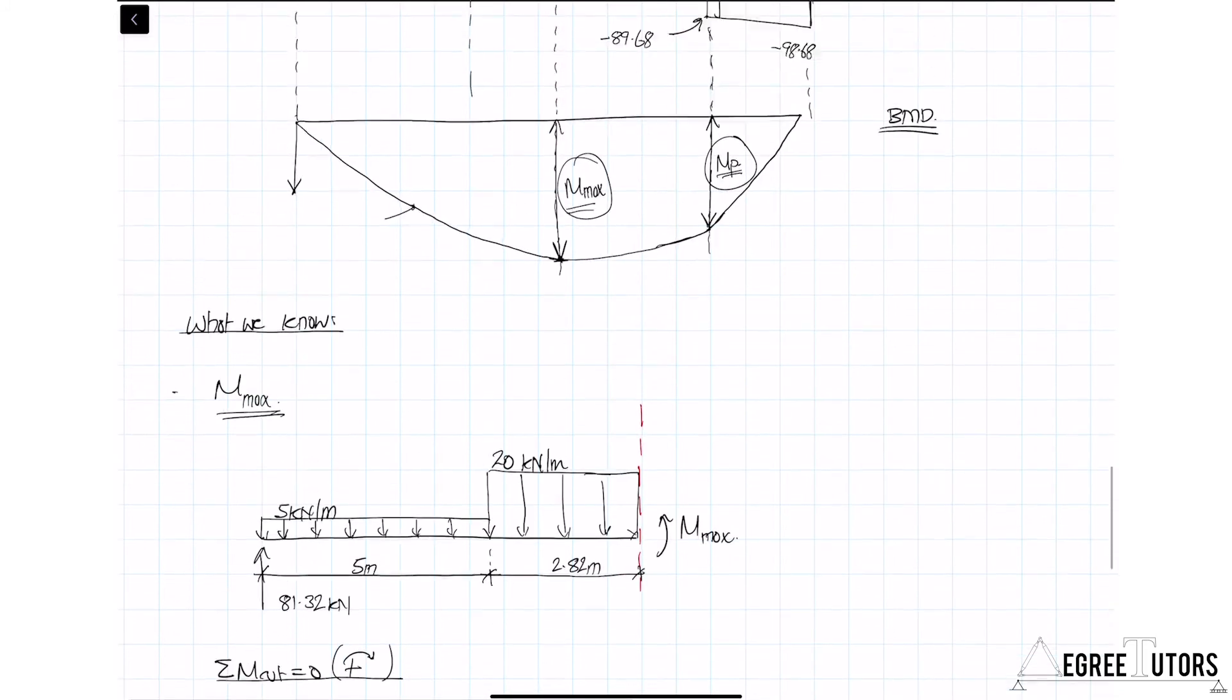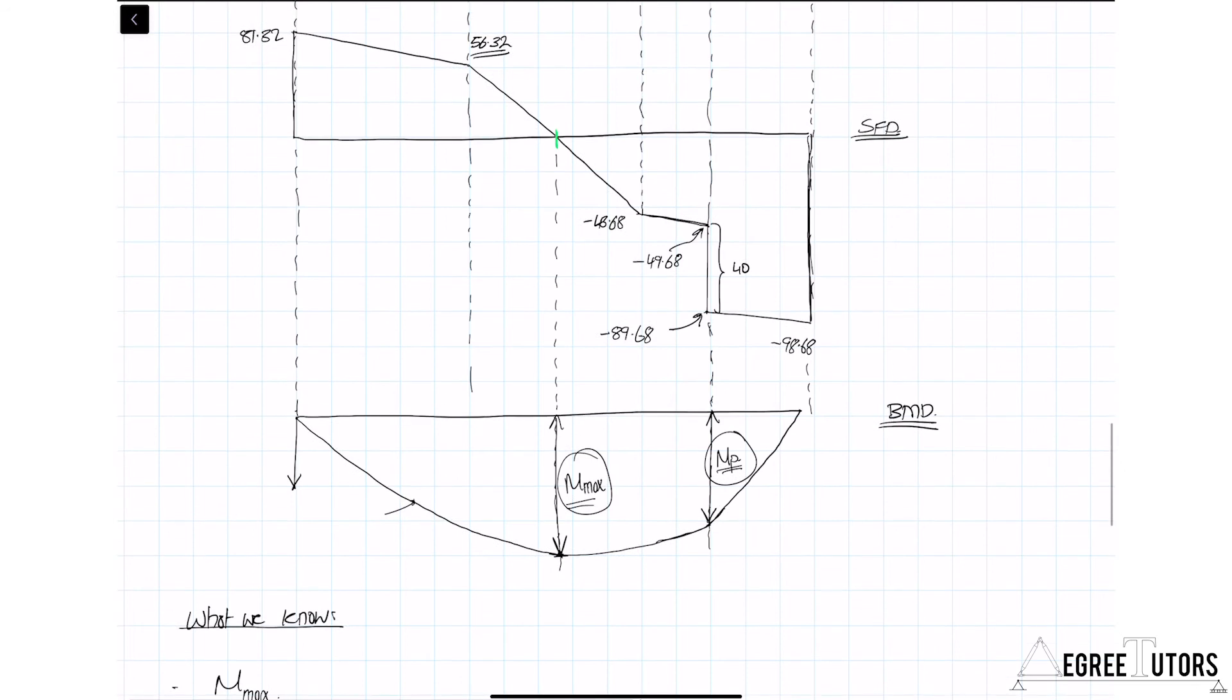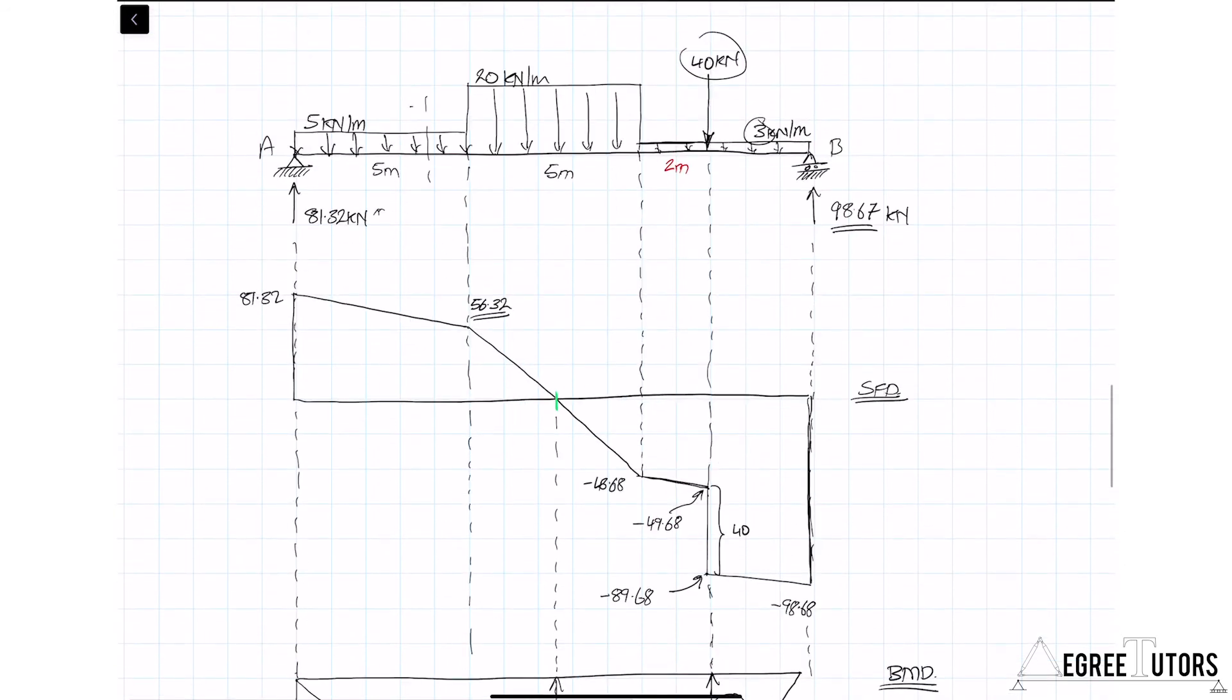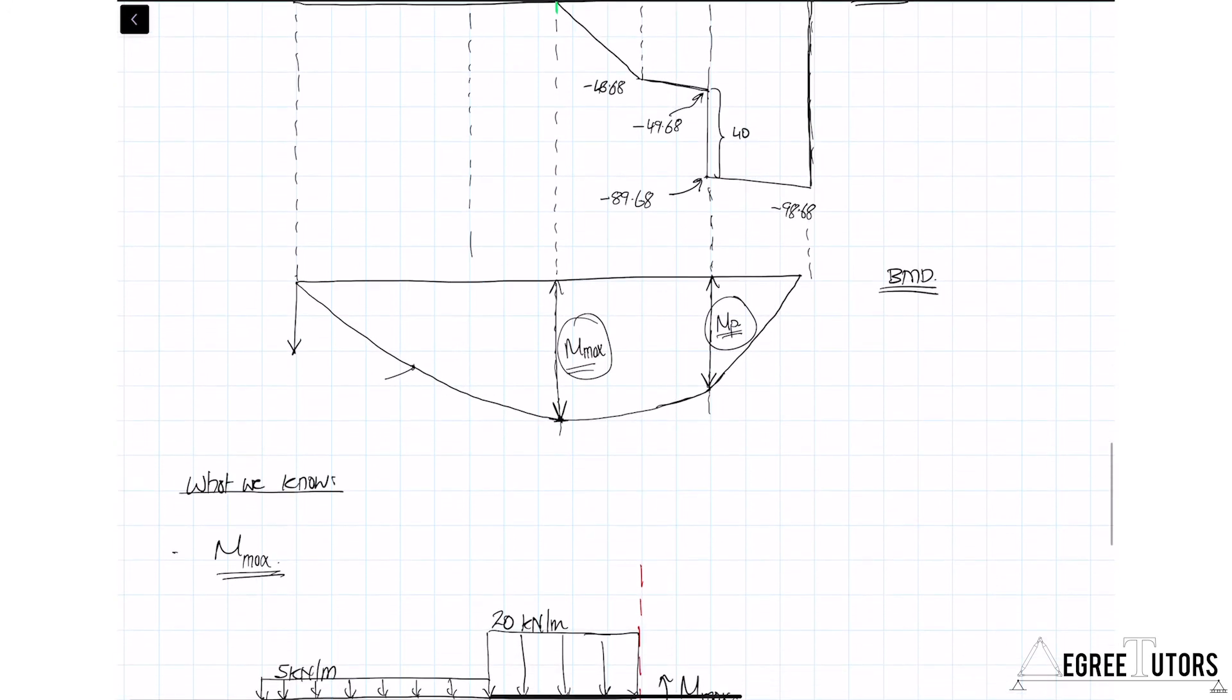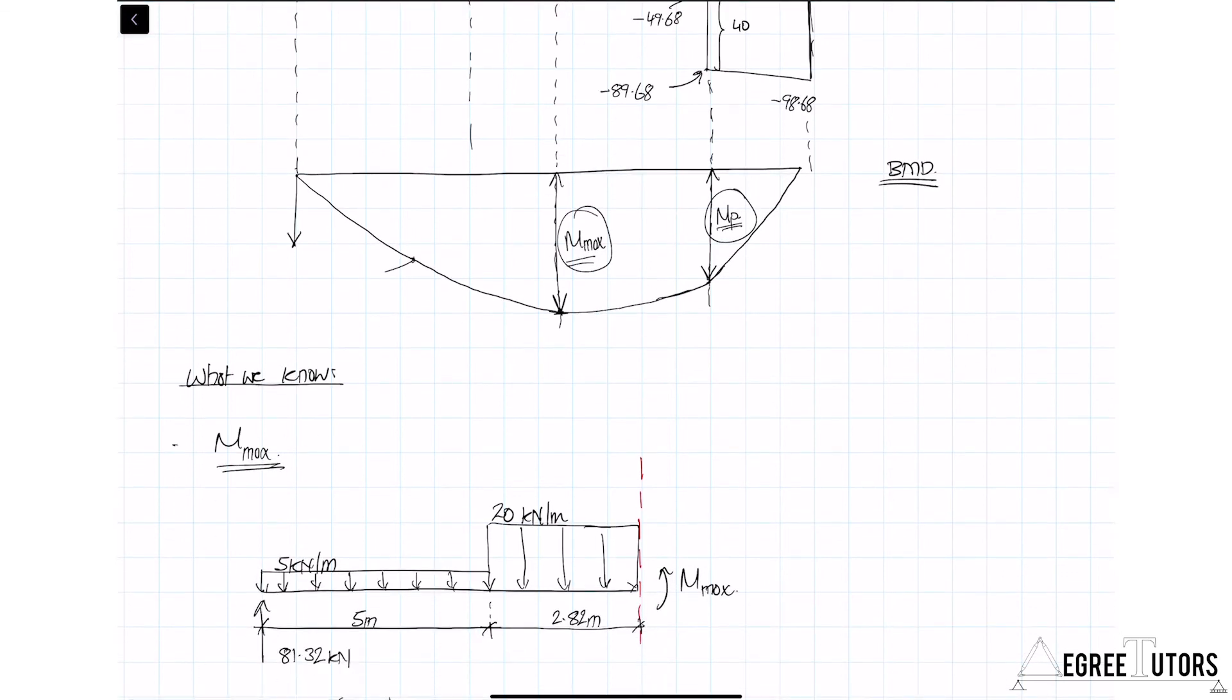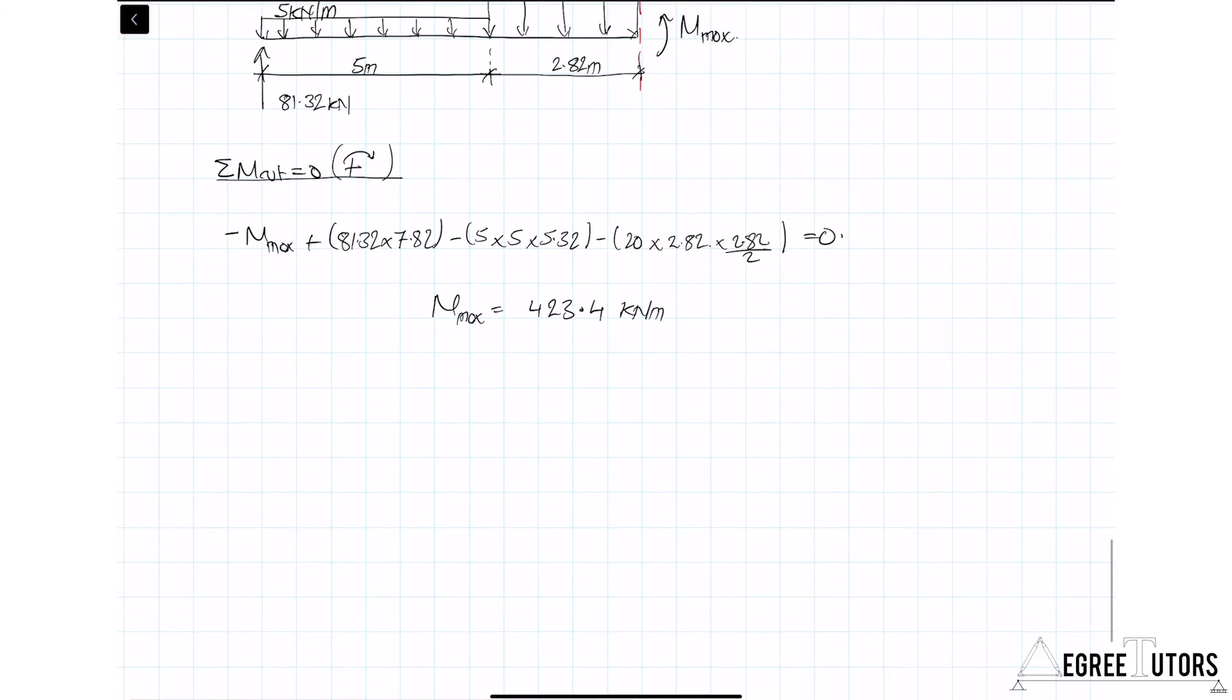As an engineer looking at this, that's the key value I'm interested in. I want to make sure that whatever I design this beam out of, whatever material I design the beam out of, it is able to withstand the bending stresses or the normal stresses that arise due to bending that would arise with a bending moment of 423.4 kN·m. So that's the key thing.